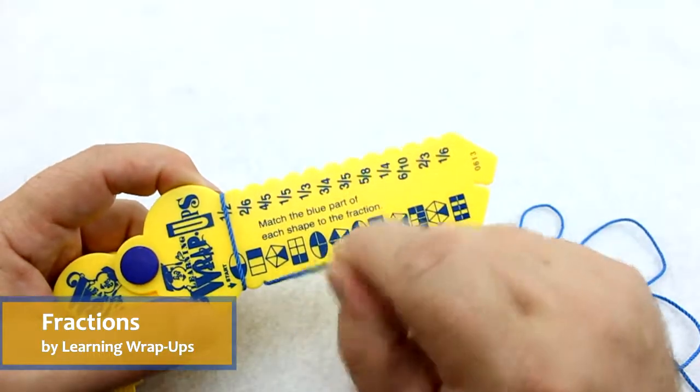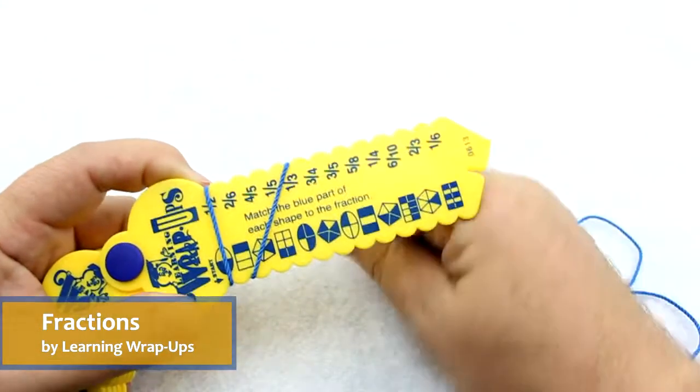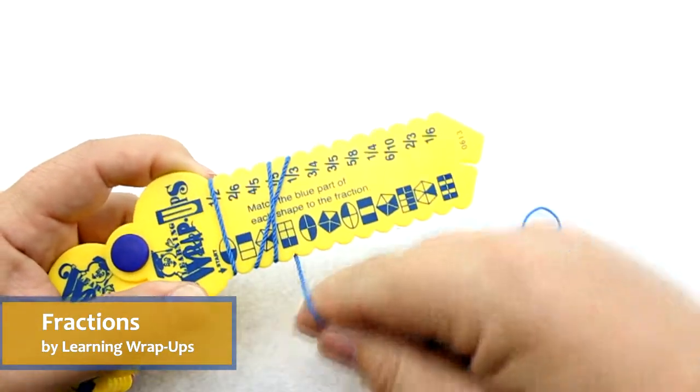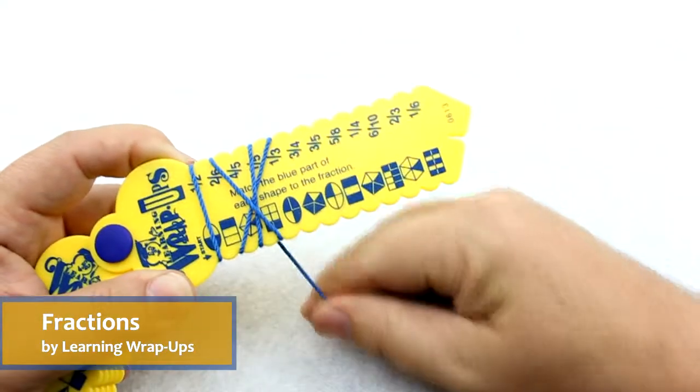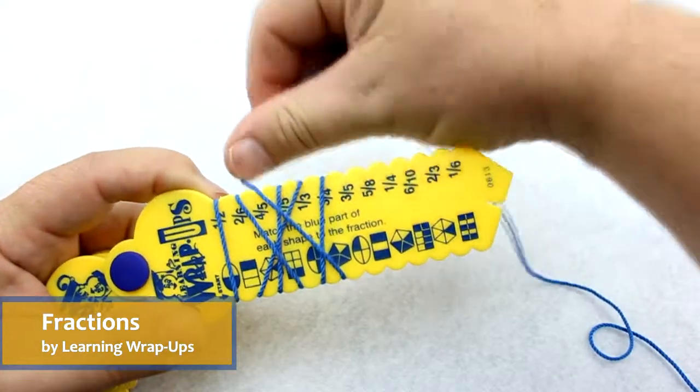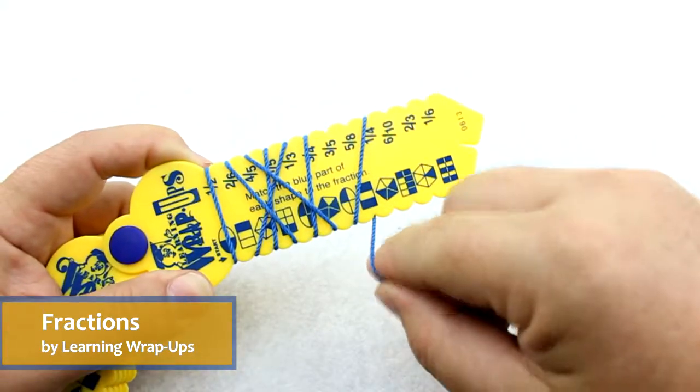And then down to the next one. Next one has three boxes and one of those is filled, so I'm going to go to one third. And this one happens to be one fifth, two sixths, three quarters, four fifths, one quarter.